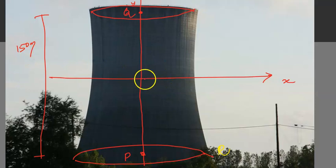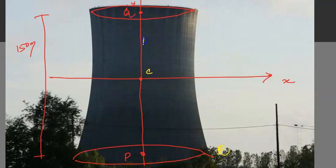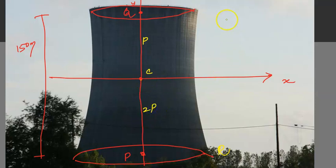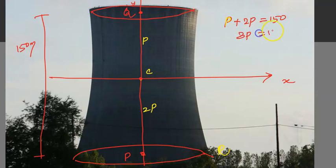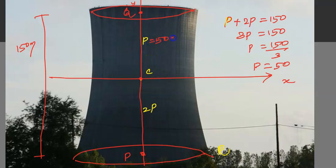This is the x axis and this is the center. We place p here: this is the path, and p that will be half and half. This is 2p. So p plus 2p equals 150 meters. Therefore 3p equals 150 meters, p equals 50. Then the top portion is 50 meters and this section is 100 meters.